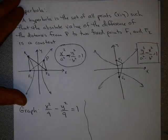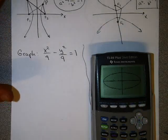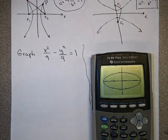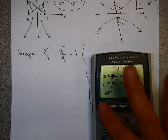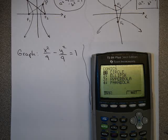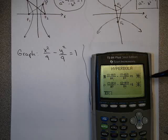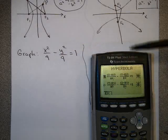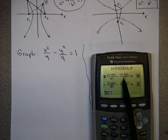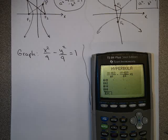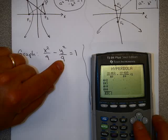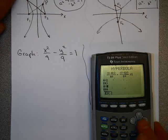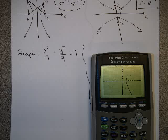This problem is easiest using your calculator. Go back to the beginning of the conics program and pick hyperbola — number 3. Notice the two forms: open along the x-axis or open along the y-axis. Since x squared is first, pick the form opening along the x-axis. a squared is 4 so a equals 2; b squared is 9 so b equals 3. h and k are both 0. Hit graph to get the picture.